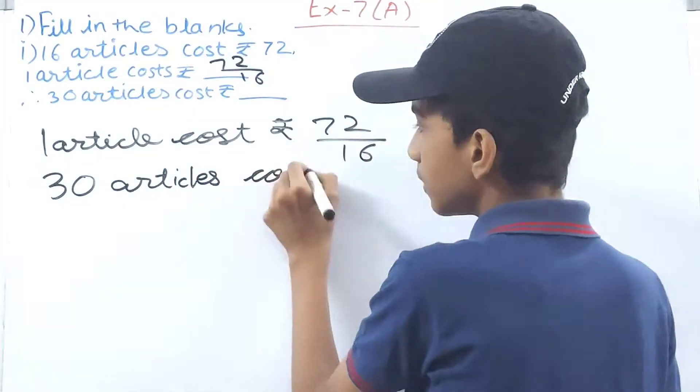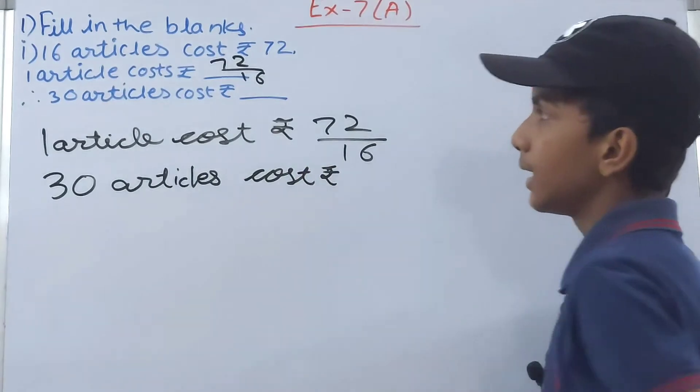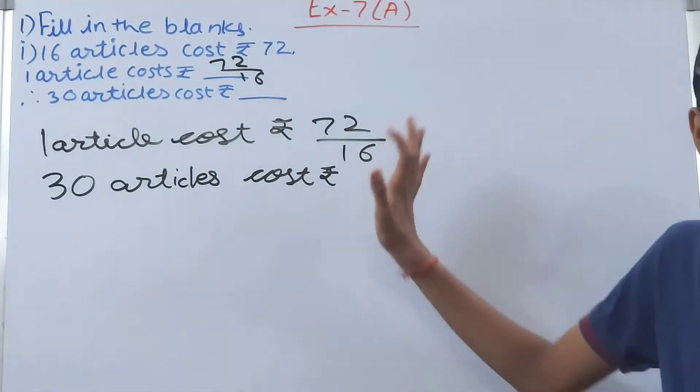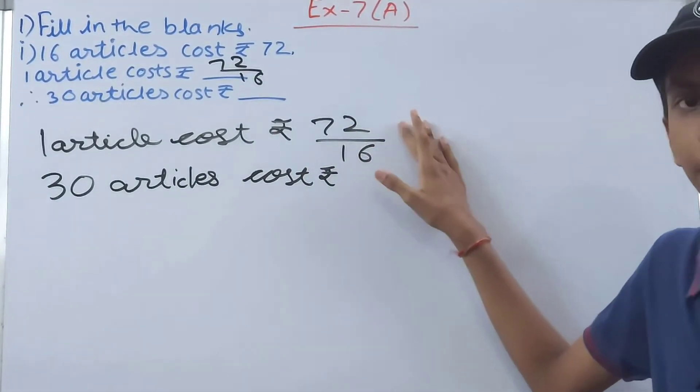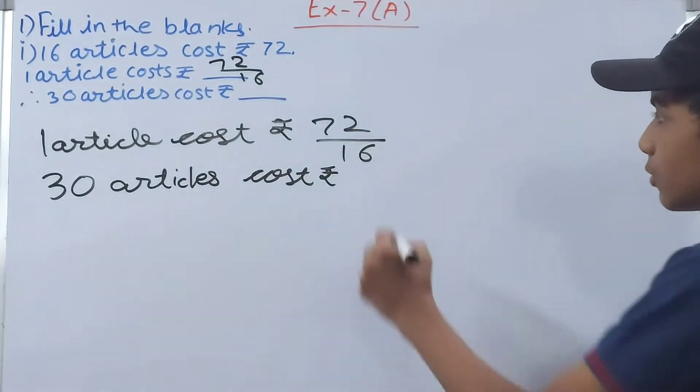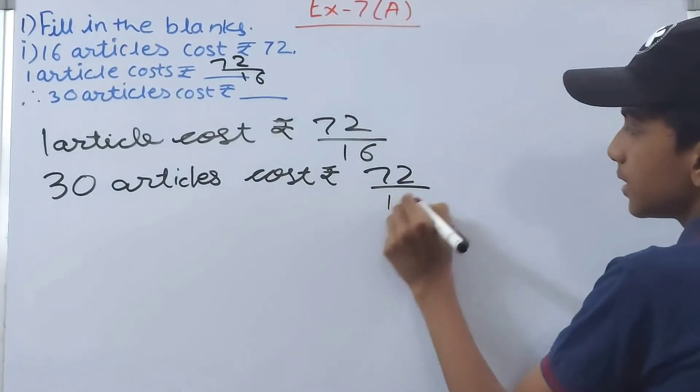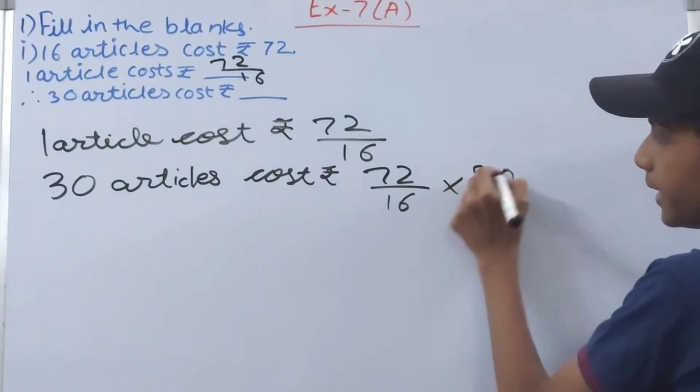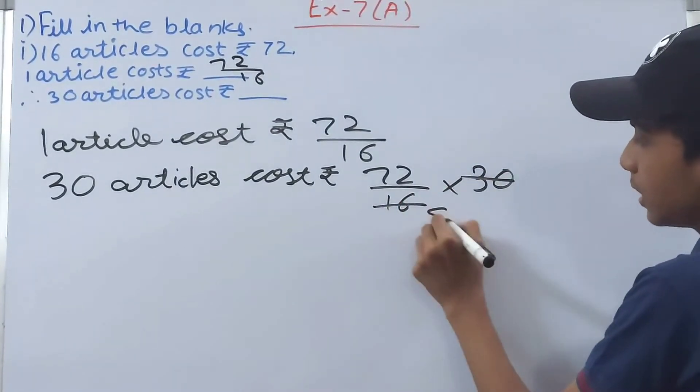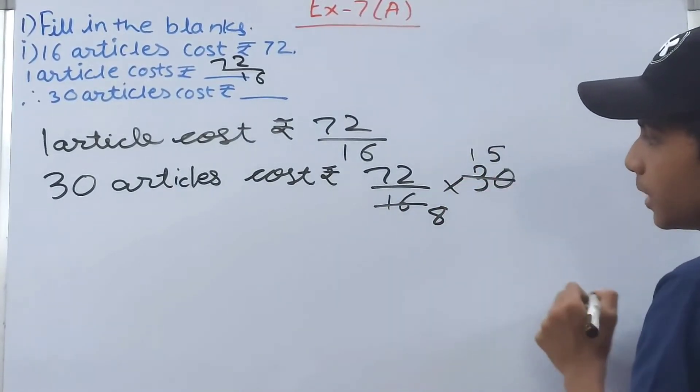Now this much is cost of one article. This we will multiply by 30. So we'll have 72 upon 16 into 30.